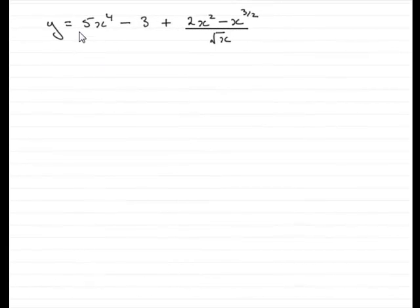Now, this part then, we're given y equals 5x to the 4 minus 3 plus, and then we've got this fraction from the first part, and we're asked to differentiate this, to find dy by dx.